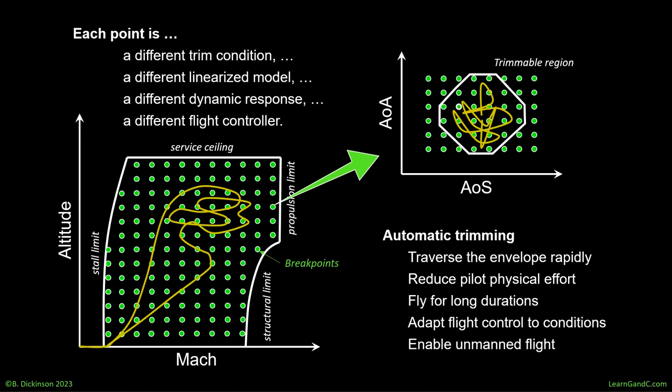In general, the less ability to trim at a flight condition, the greater the tendency to dynamically diverge from that condition, regardless of control effort. So while there are exceptions, the statement, if you can't trim there, you can't fly there, holds a lot of truth.